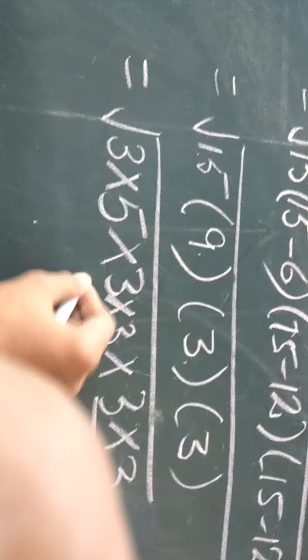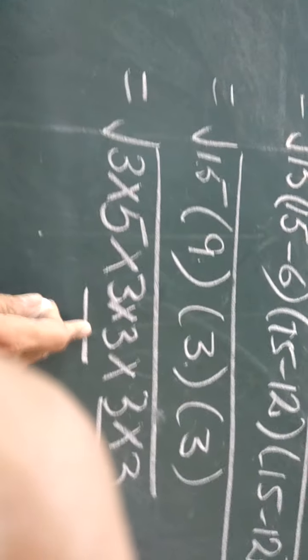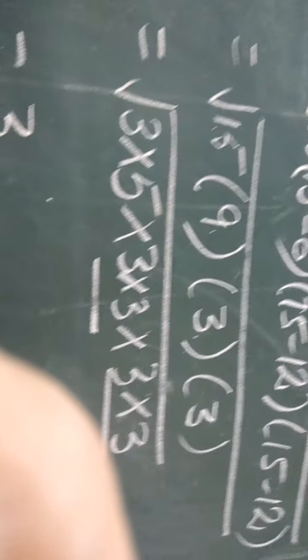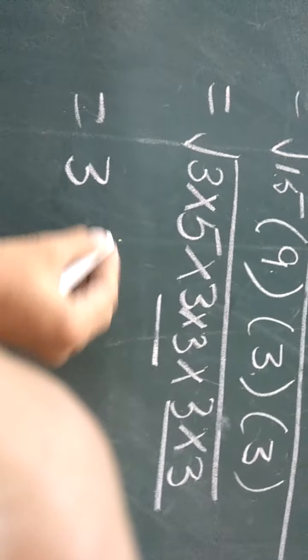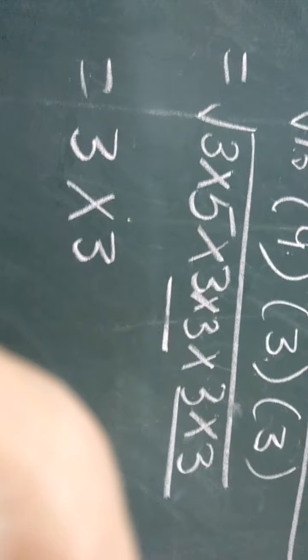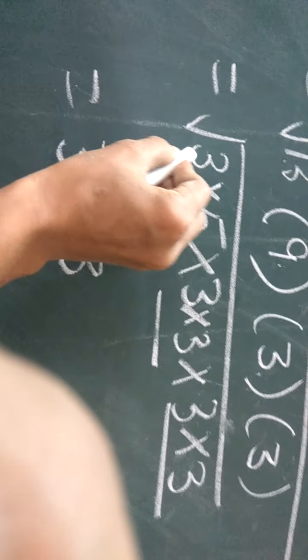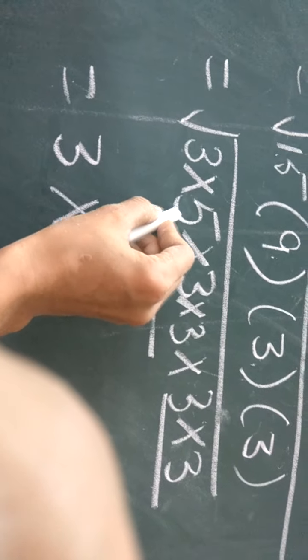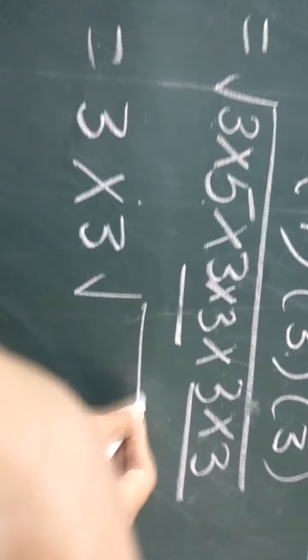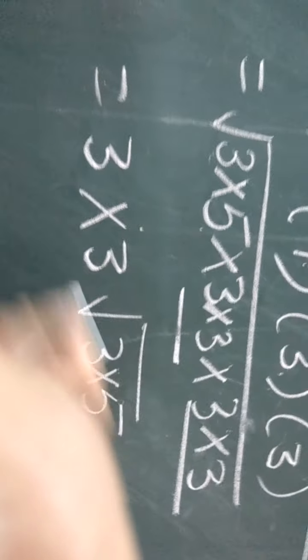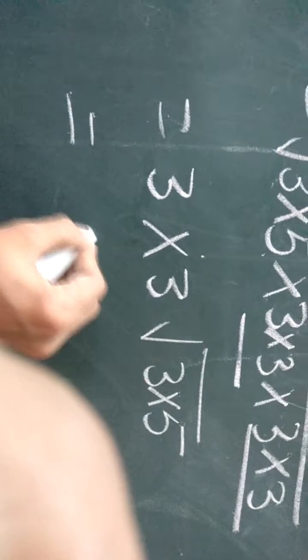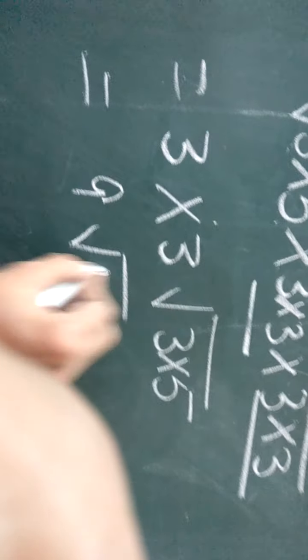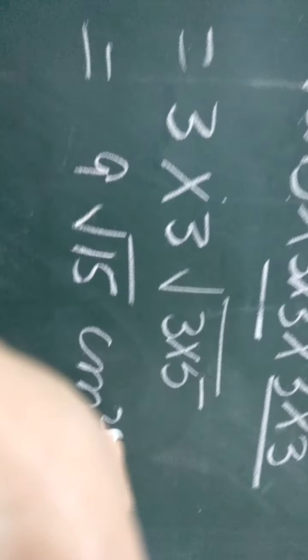Let us make the pairs. Now from this pair we will take out one 3 outside. From this pair we will take out one 3 outside. Now for this 3 no other pair is there, and this 5 is also left unpaired. So we will keep them inside. 3 times 3 is 9 square root of 15 cm square.